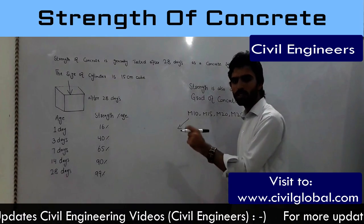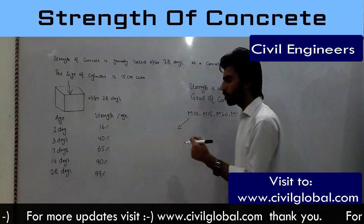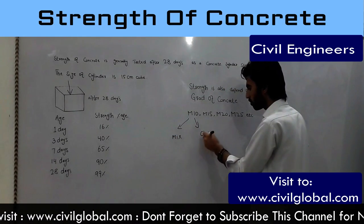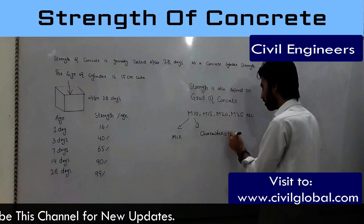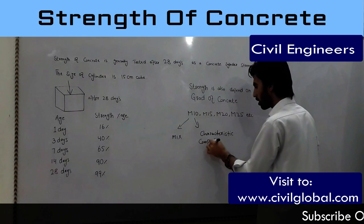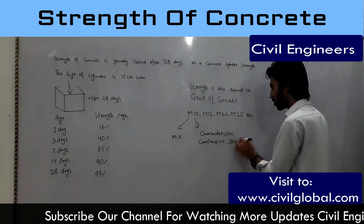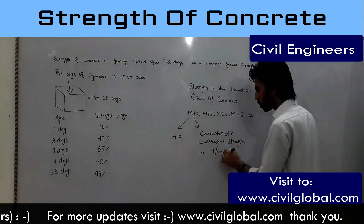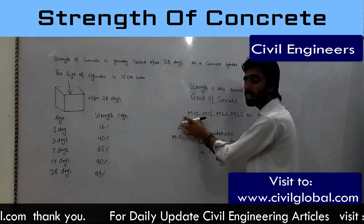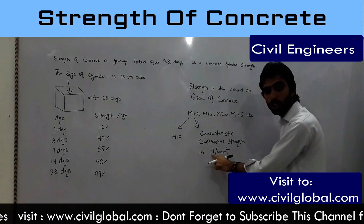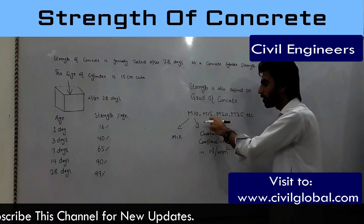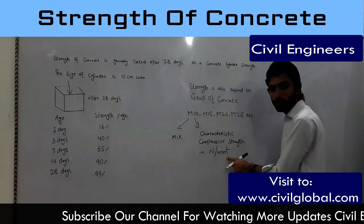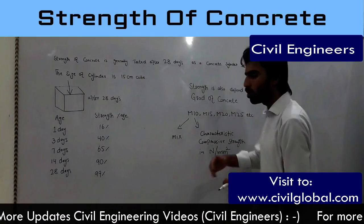There is a separate YouTube video on grade of concrete you can watch. M stands for mix, and the number represents the characteristic compressive strength in Newton per millimeter square. So M10 means the grade of concrete must achieve a strength of 10 N/mm² after 28 days. M15 gives 15 N/mm², M20 gives 20 N/mm², and M25 gives 25 N/mm² after 28 days.